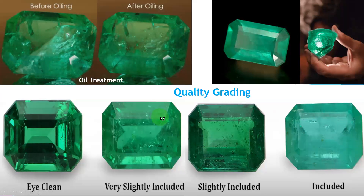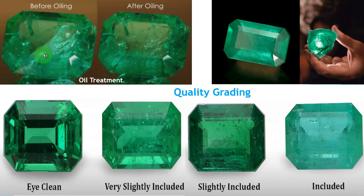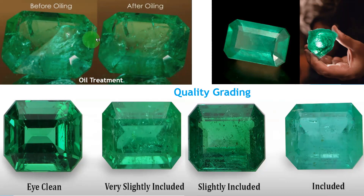To cover the cracks inside the stone, there is a treatment called oiling. This is the emerald stone before oiling. Oiling is a treatment — it is an ethical treatment and it is allowed. When we use oil treatment to the stone, the visible cracks are covered after oiling, and then the beauty and colour of the stone can be seen more clearly. Oiling is one standard treatment done to emeralds.